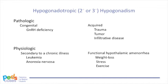Hypogonadotropic hypogonadism is characterized by low pre-pubertal levels of gonadotropins. The causes can be pathologic and permanent, meaning there is an abnormality in the HPG axis. Some children are born with an abnormal hypothalamus and/or pituitary gland, with dysfunction in the production, release, or ability of GnRH to stimulate pulsatile secretion of LH and FSH from the anterior pituitary. The GnRH deficiency can be isolated or combined with other pituitary hormone deficiencies. Acquired insults to the hypothalamus — including trauma, tumor, and infiltrative disease — can also lead to hypogonadism. There are also physiologic causes where the HPG axis does not work properly due to systemic illness or physical and/or psychological stress.